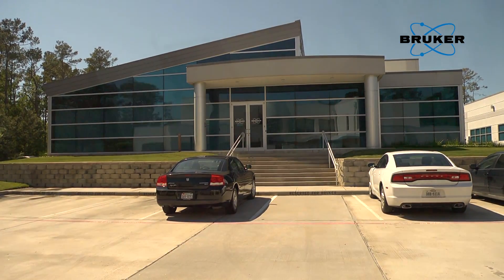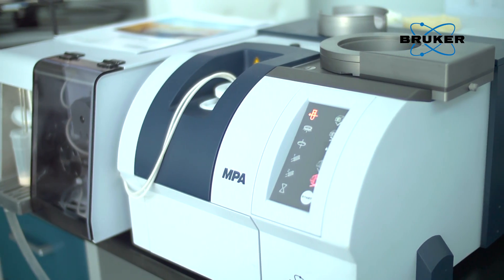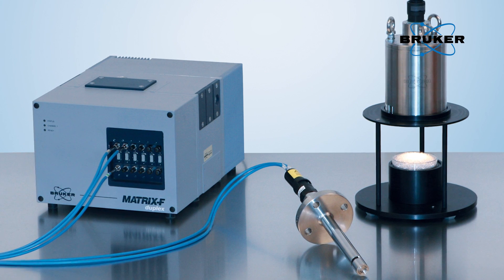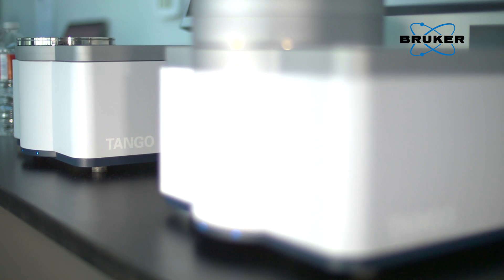Bruker's FT-NIR product line includes the Tango, the MPA, and Matrix I spectrometers for lab and at-line applications, as well as the Matrix F-Series for process control. Faster, simpler, more secure.